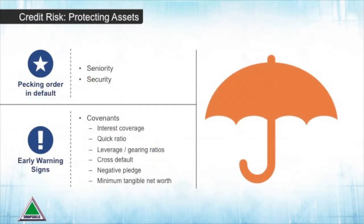A covenant is a warning flag put into a loan by bankers that warns them if the borrower may be running into financial difficulty. These covenants look at the company's ability to raise cash quickly — what we call liquidity ratios — and monitor how much debt the company has taken on relative to its equity or capital base. We call this a leverage ratio.